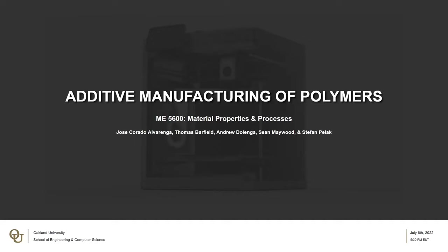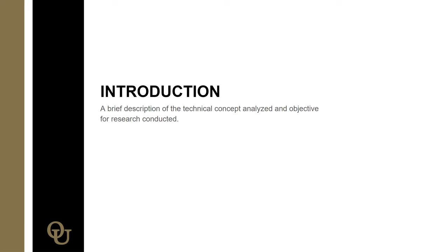Welcome to our presentation for our final project for ME 5600 Material Properties and Processes. For our topic, we chose to take a literature review of additive manufacturing of polymers. Our group consists of Jose Corrado, Thomas Barfield, Andrew Dolenga, Sean Maywood, and Stefan Pella. We're going to start off with a brief introduction of the technical concepts that we analyzed and the objective for the research.